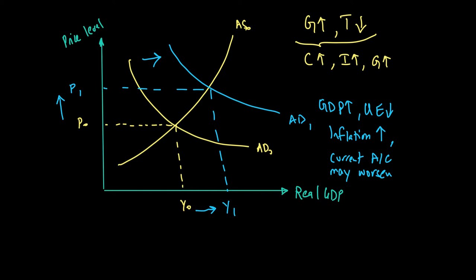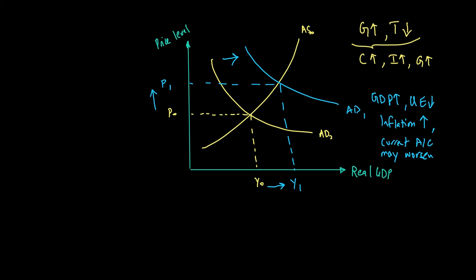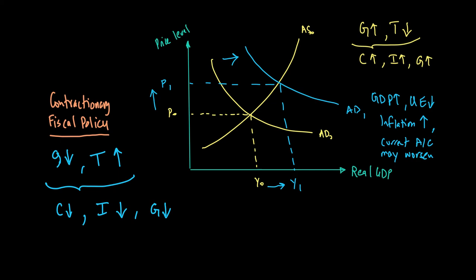The contractionary fiscal policy, on the other hand, has an opposite effect. In a contractionary fiscal policy, we're trying to make government expenditure go down. At the same time, we're looking at taxes to go up. That in turn would mean disposable income is going down, so consumption will fall. Firms are taxed more, so their incentive to invest goes down. At the same time, government spending is also reduced, so G is falling. All of this will mean that the AD curve will fall.